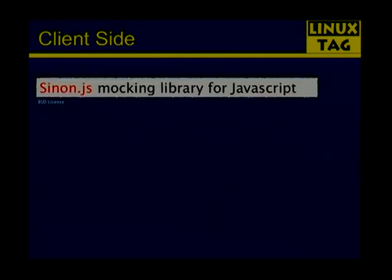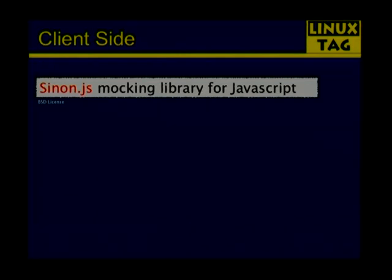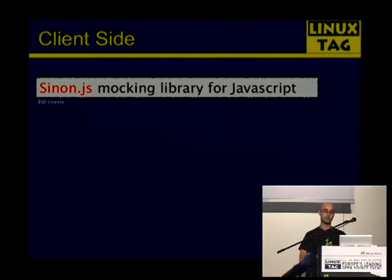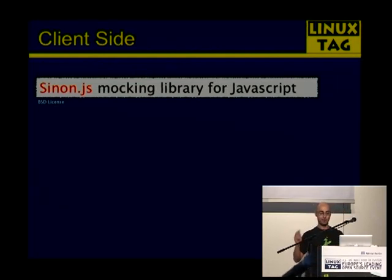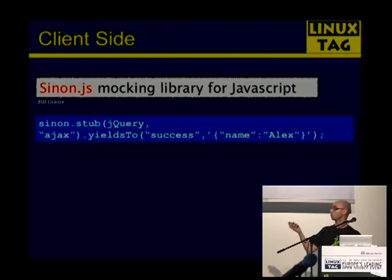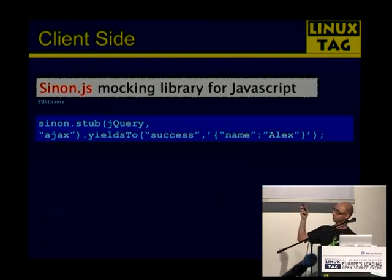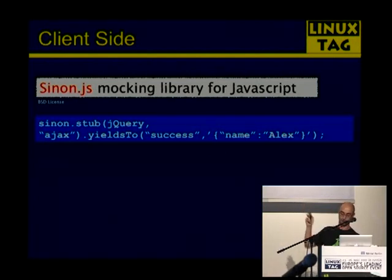We have also seen that your tests must be isolated. There may be parts of your JavaScript code that require a server response, but you cannot talk to an external system. So Sinon is a mocking library for JavaScript that can help you create fake server responses. For example, to create a fake JSON response it's as easy as calling the stub method. In this case, we are stubbing the Ajax method of jQuery and simply returning a JSON structure.